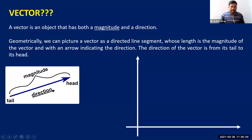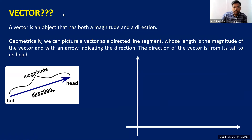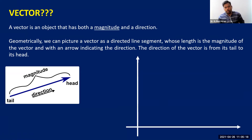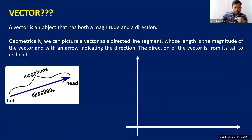Before getting into eigenvalues or eigenvectors, let me first recall what a vector is. A vector is an object that has both magnitude and direction — it may be a quantity which has both magnitude and direction.